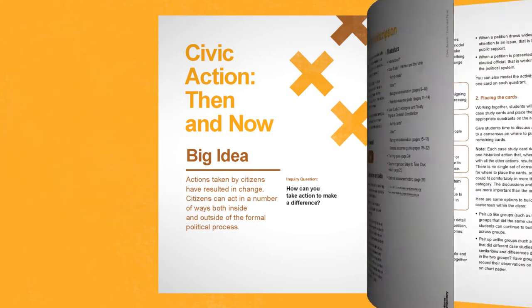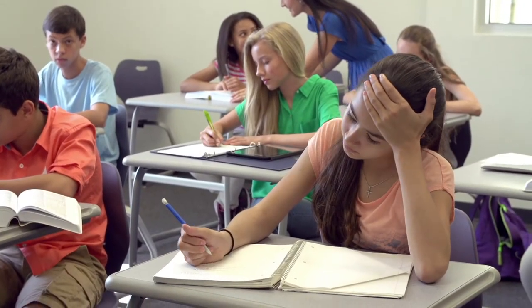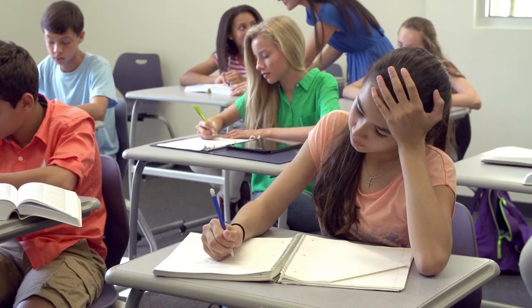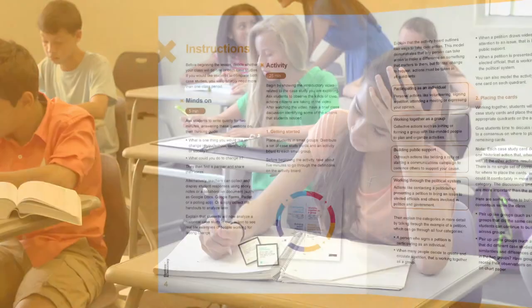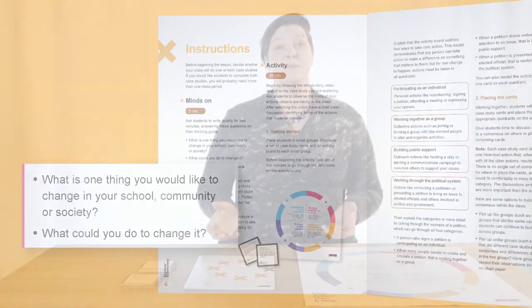We start with the Minds On, the first part of the three-part lesson structure that's embedded in all of our activities. These first five minutes help students connect their own experiences to the big idea of the lesson. In this Minds On activity, students reflect and write quietly in response to these questions. Students usually have a pretty good idea of what they would like to change and they usually have some experience with how to change things.